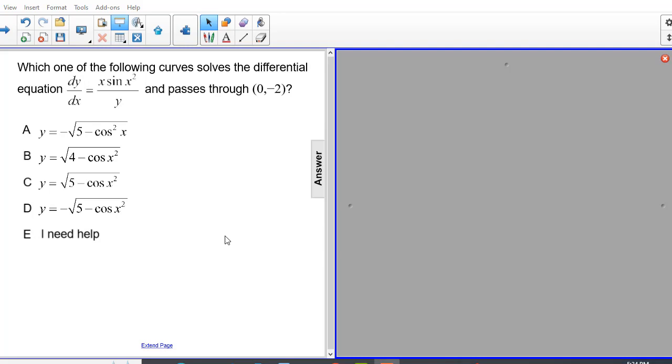Which of the following curves solves the differential equation dy/dx equals x times sine x squared over y and passes through the point (0, -2)?